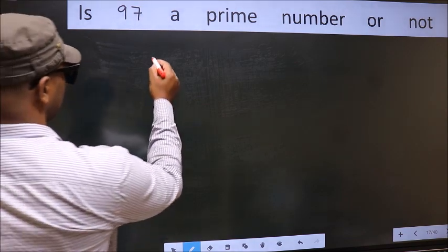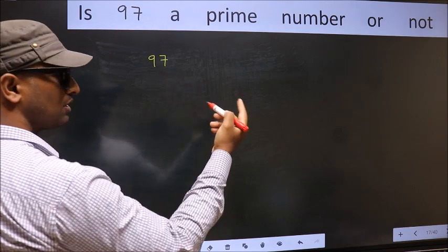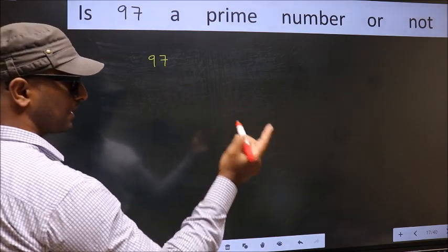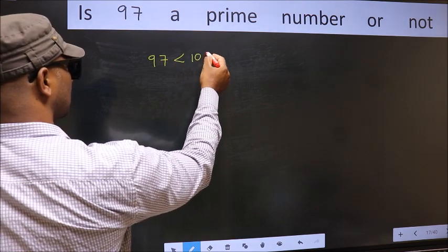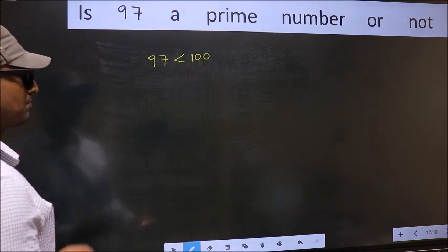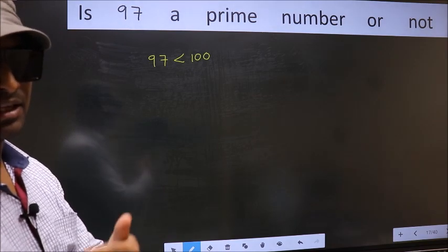Given number is 97. This is close to which perfect square number? This is close to 100, perfect square number. This is your step 1.